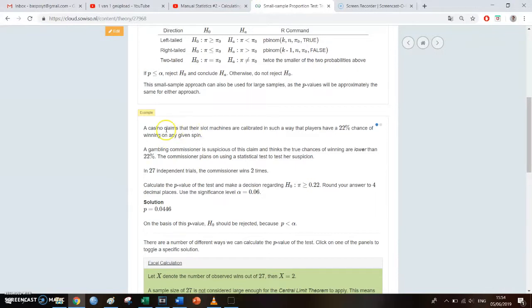A casino claims that their slot machines are calibrated in such a way that the players have a 22% chance on winning on any given spin. Now there's a commissioner who said that the actual chance is lower and they're gonna investigate that by doing a hypothesis test.